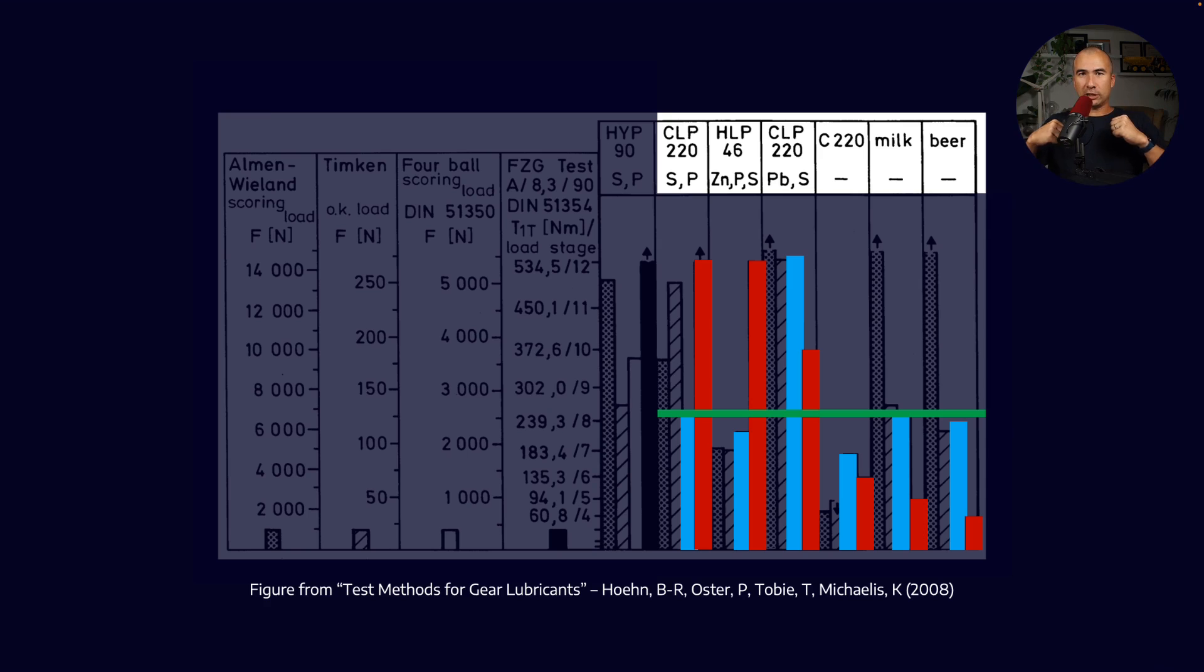And we know that this doesn't correlate to real world performance. So the question is, why does the FZG rig match real world performance where the four ball test doesn't? Well, the FZG test rig replicates real world conditions much better than the four ball test does, right?